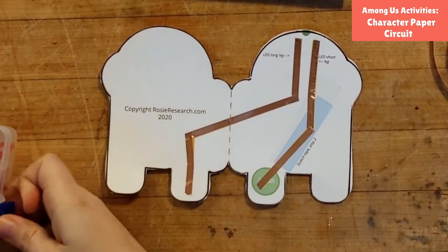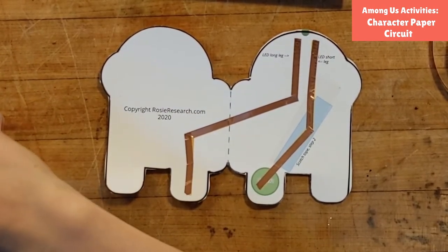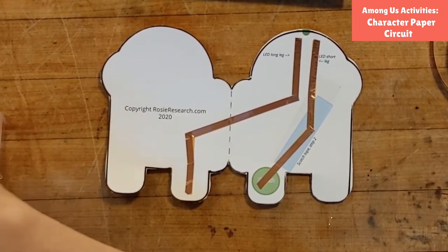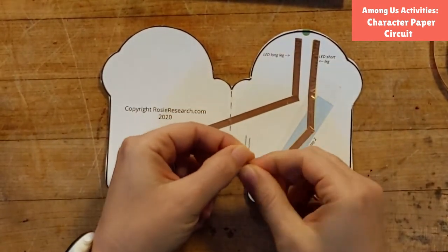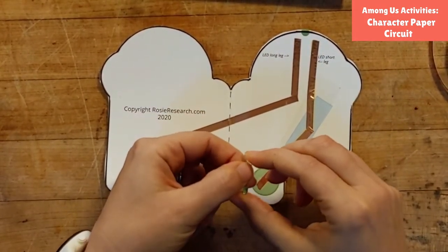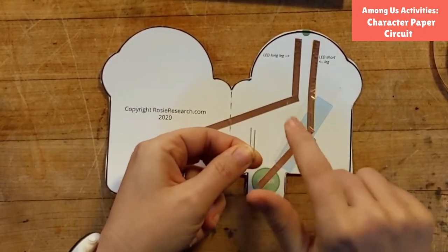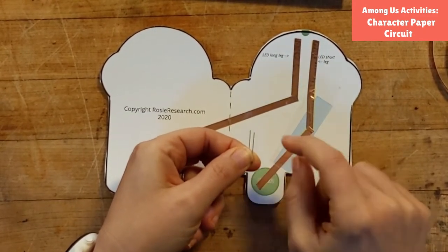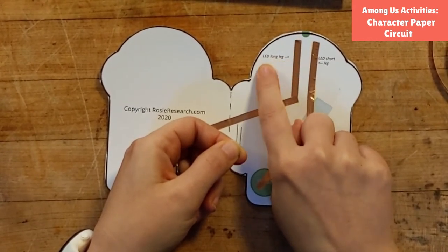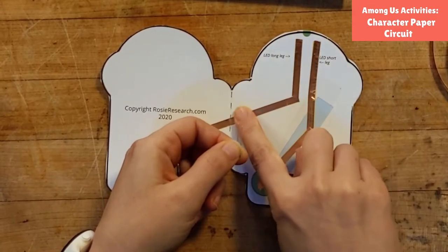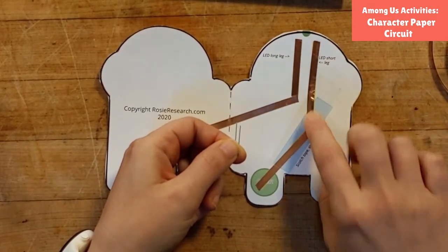So now we're going to choose our color of LED. I think I'm going to go for green this time. And you'll notice our LEDs. They have a long leg and a short leg. And so the long leg always goes to the top of the battery. And on our circuit templates we tell you where the long leg goes. So this one says LED long leg. That goes onto this wire. And the LED short leg goes onto this one.